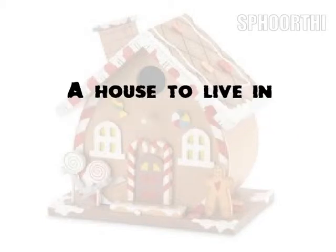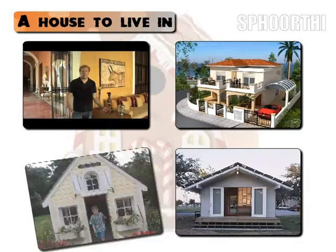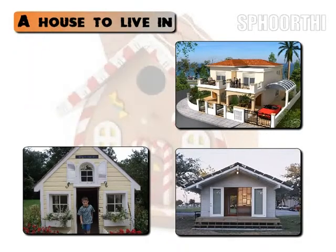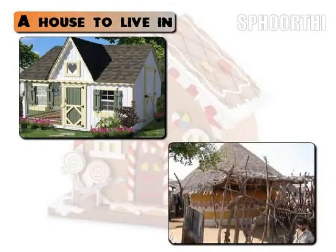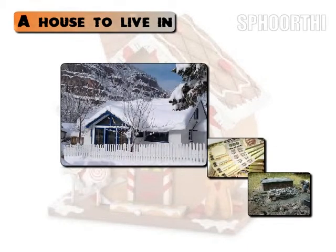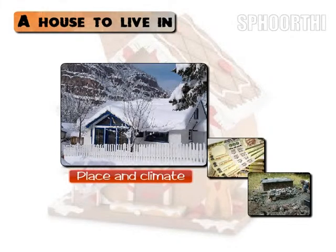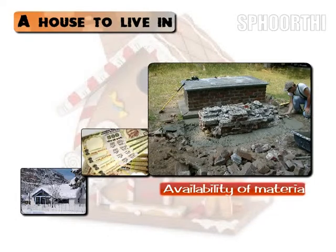Housing: a house to live in. Houses that we all live in provide us with shelter, warmth, and safety. The design and the material of the house depends on the location. The type of house to be built is influenced by three main factors: place and climate, economy, and availability of materials.